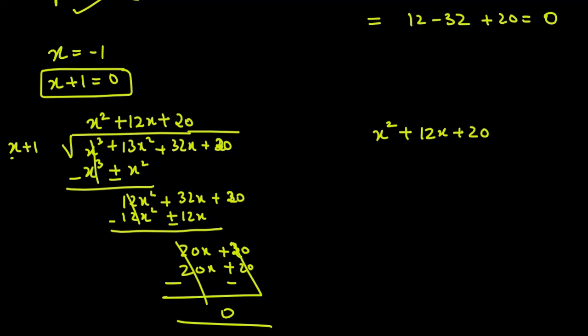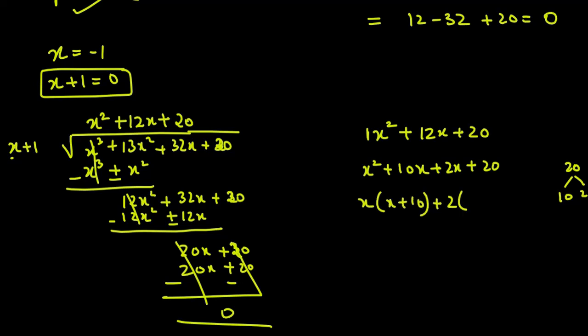For x square plus 12x plus 20, we do middle term splitting. Here 1 × 20 = 20. Factors of 20 that add to 12 are 10 and 2. So we write x square plus 10x plus 2x plus 20. From the first two terms take x common — x(x plus 10). From the last two terms take 2 common — 2(x plus 10). So two factors are (x plus 10) and (x plus 2).